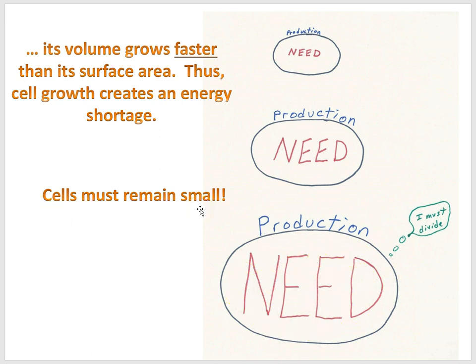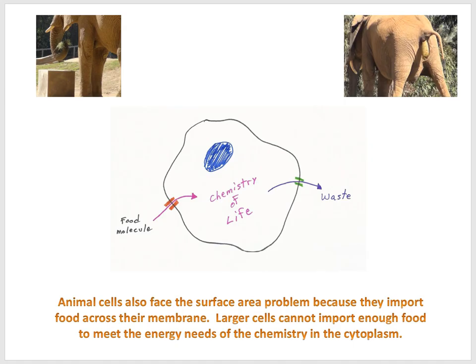Cells must remain small. So, cells are microscopic because of the way they produce energy. And let me qualify that a little bit. Bacteria are microscopic because of the way bacteria produce energy in this fashion. But we'll see the story is a little bit different for more complicated cells like animal cells.